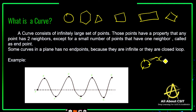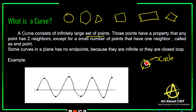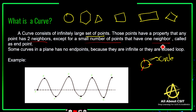A curve consists of an infinitely large set of points. Those points have the property that any point has two neighbors. If you see this diagram, this is a point, this point has two neighbors — this is one neighbor and this is another neighbor. Each point along the curve similarly has two neighbors.